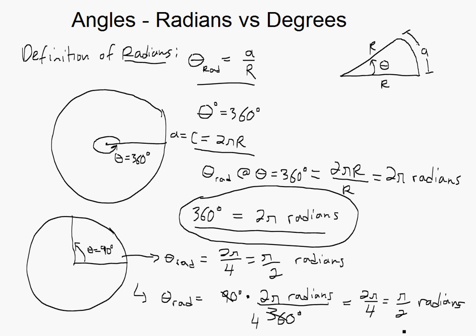So now you see what radians are — basically 360 degrees equals 2π radians. In my later videos I'll be using radians instead of degrees, and you'll understand why it's used more often.